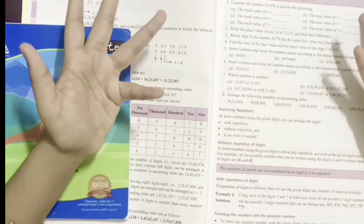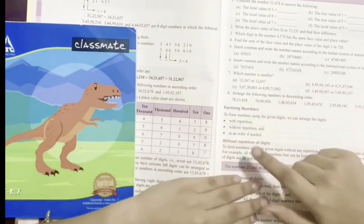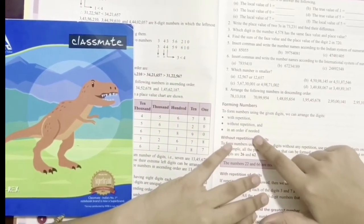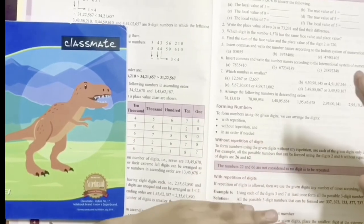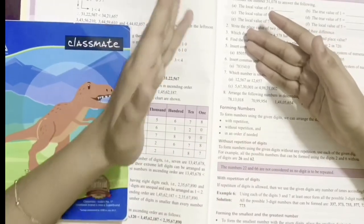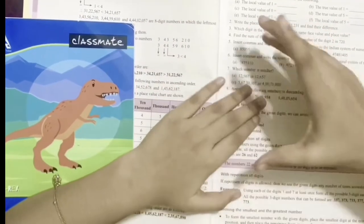The next one is in an order if needed, which means if someone tells you to make the greatest number or the smallest number, you should arrange the digits in order accordingly.